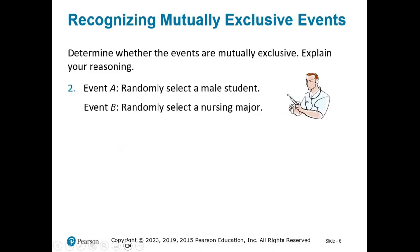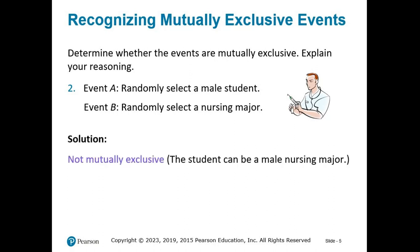Number 2: Event A, randomly select a male student. Event B, randomly select a nursing major. Are these mutually exclusive? Can a person be both a male student and a nursing major? Yes, they can do both at once. The outcomes of the events overlap, so these events are not mutually exclusive.